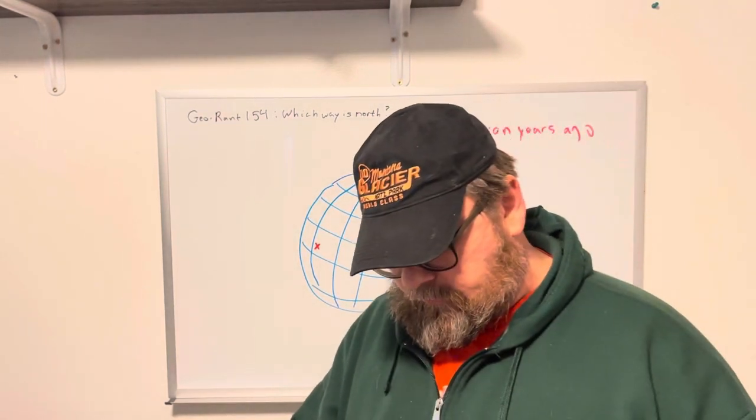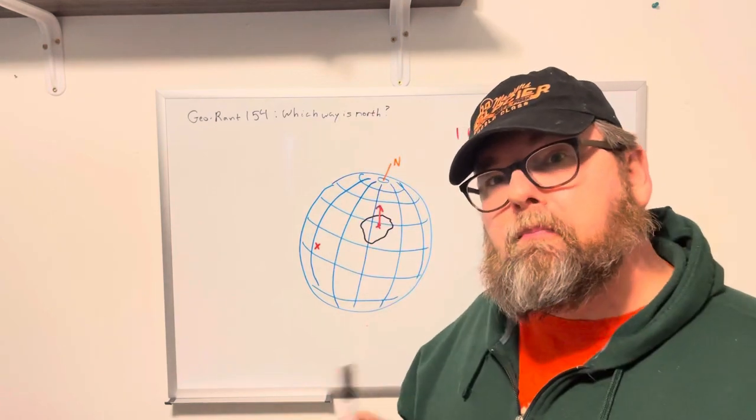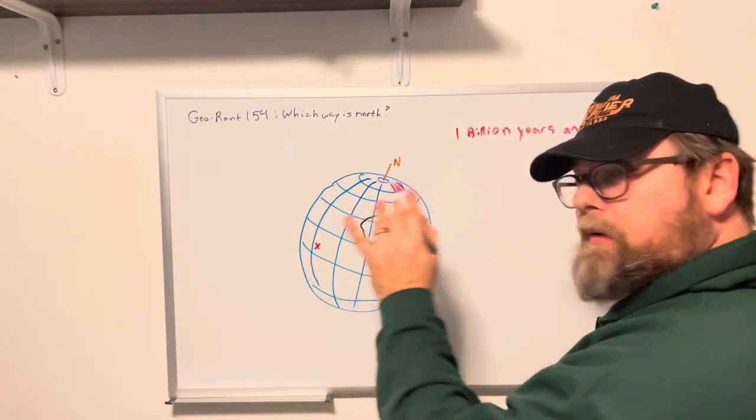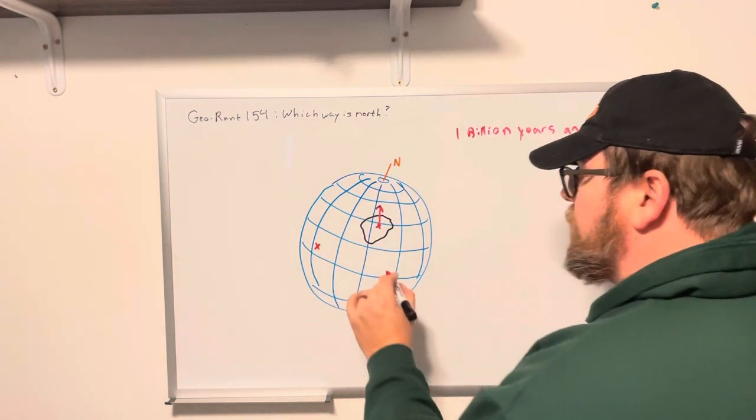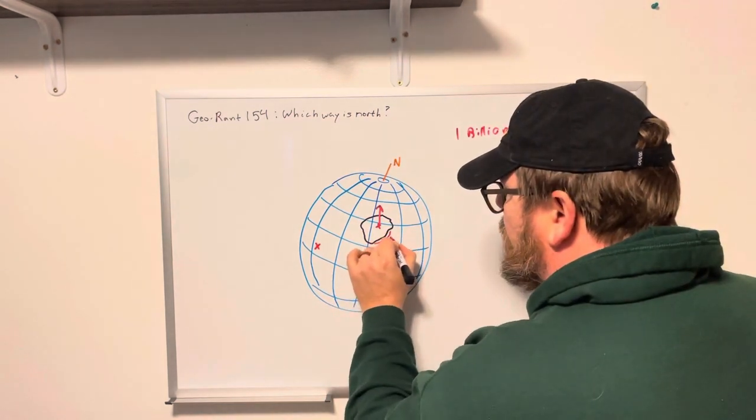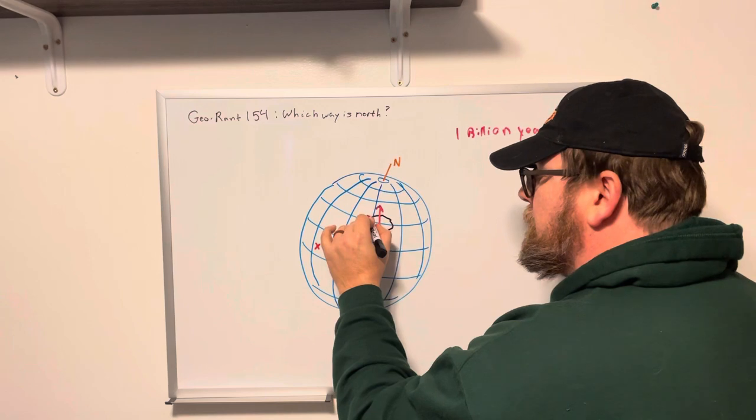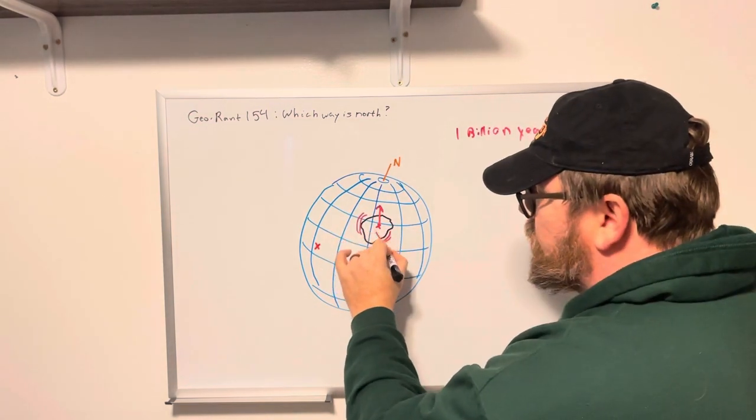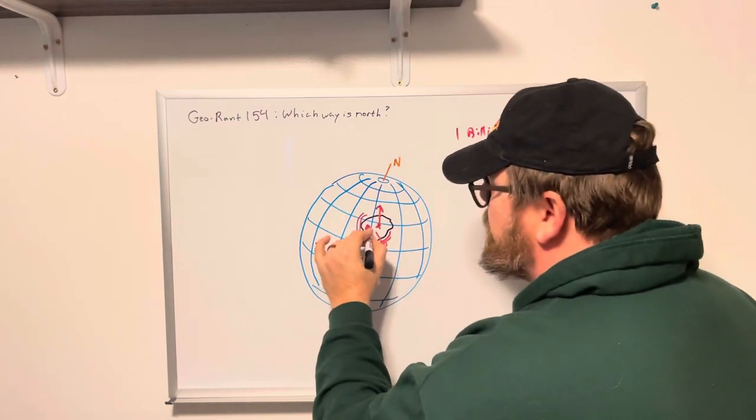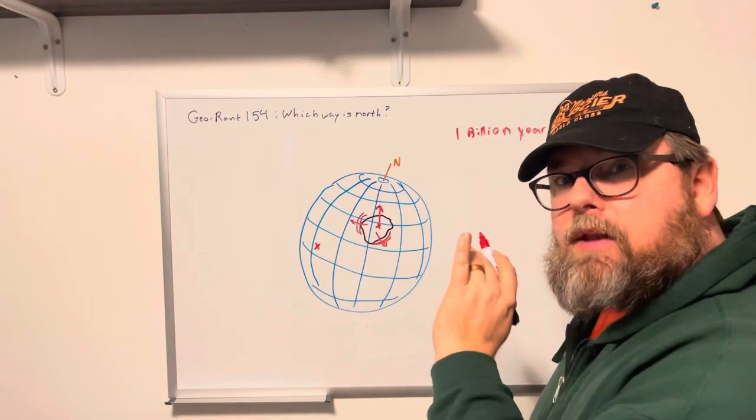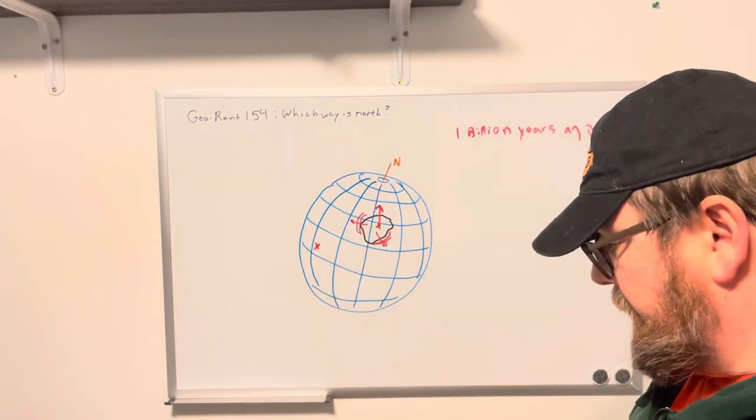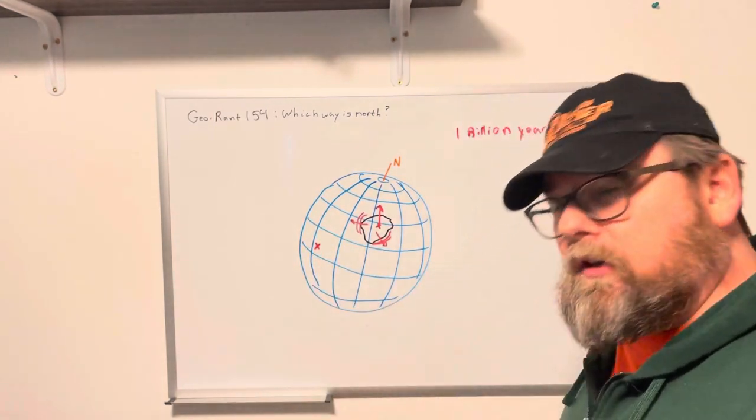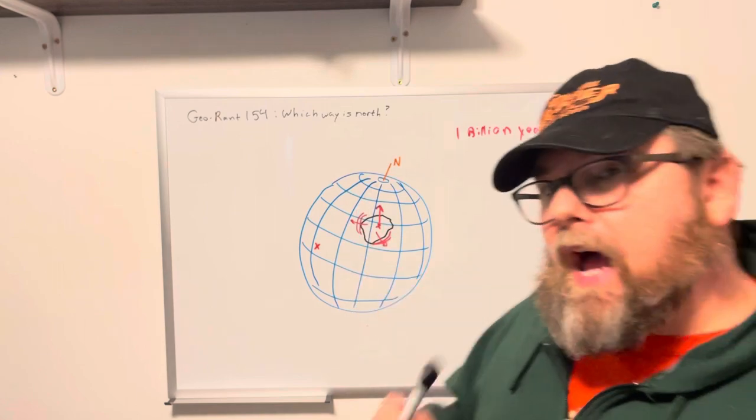Now, when we talk as geologists, we tend to use modern directions. And some of you have heard me talk about this before. Like when I talk about how North America was built, you get accretions over here, and mostly over here over time. So it was built from the Northwest to the Southeast, and basically from the East to West in modern relationships. And when I say that, that's what I'm talking about. I mean modern position of the continent.